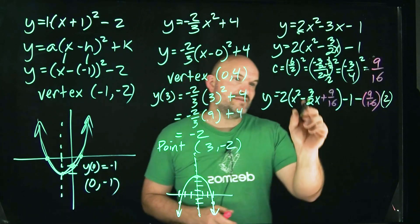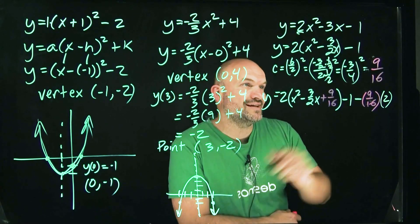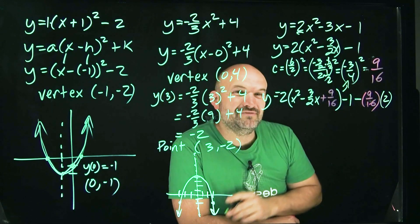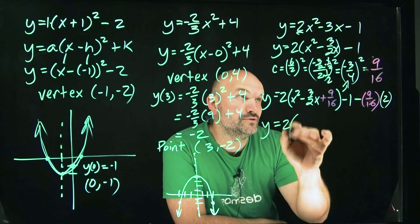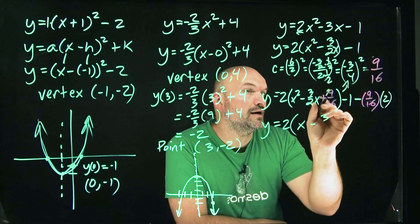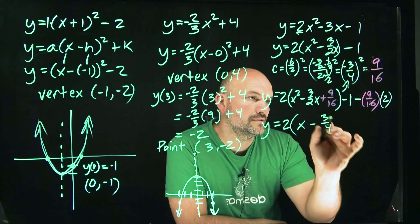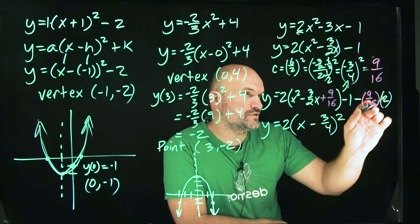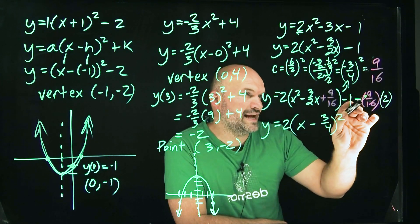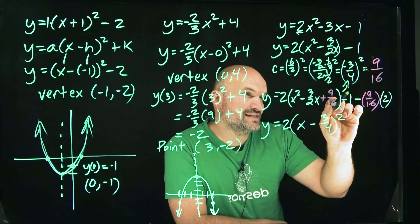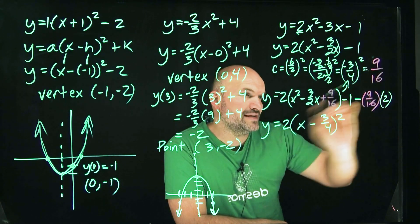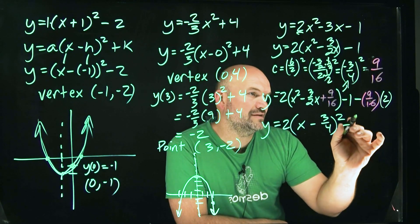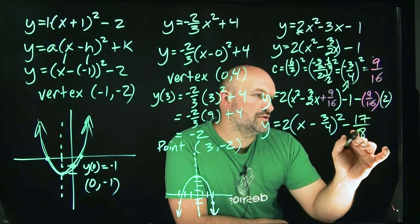So now we need to identify what the perfect square trinomial is. And guess what, guys? Whatever your b divided by 2 is, that's going to be your perfect square trinomial. So y equals 2 times x minus 3 fourths, quantity squared. Let's go and do this work here. So that's going to be 1 over 8. I can rewrite negative 1 as 8 over 8. So therefore it would be 8 over 8 minus 9 over 8. So therefore that's going to be negative 17 over 8.